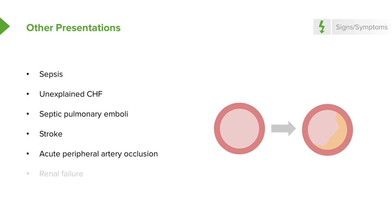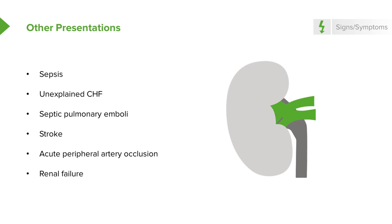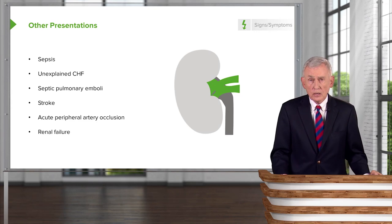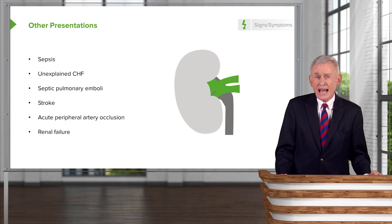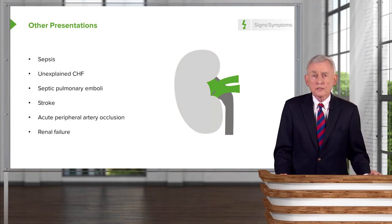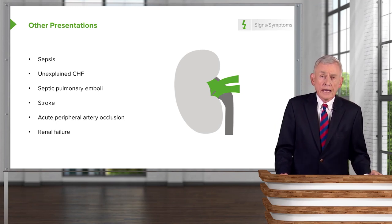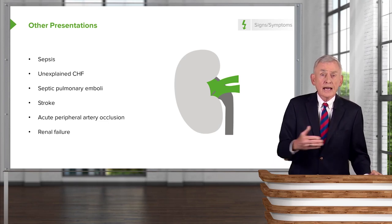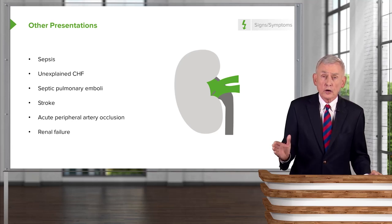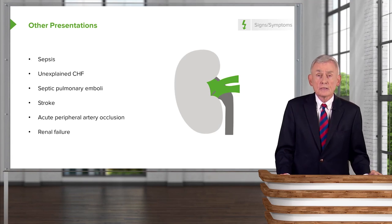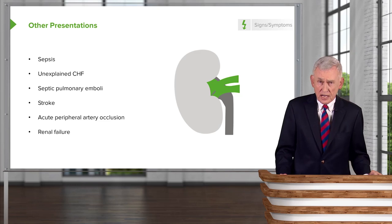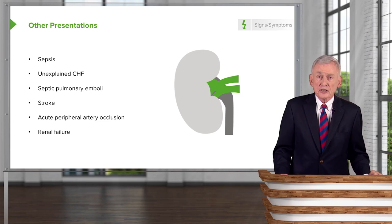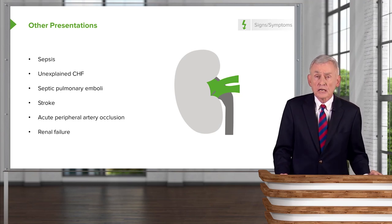Acute peripheral artery occlusion or renal failure can also be presentations. I know of one patient — a young man with a lot of acne — who came in with renal failure and no fever, with nothing to initially suspect endocarditis. But on a hunch, blood cultures were drawn and were positive for coagulase-negative staphylococci across several cultures. Patients in renal failure may not have the fever you're expecting. In fact, one of the causes of acute and chronic renal failure is infective endocarditis.